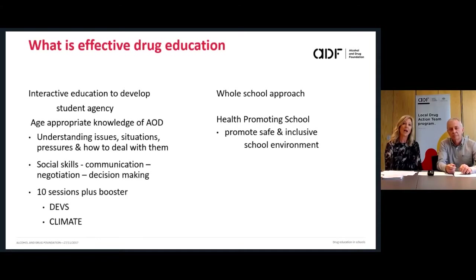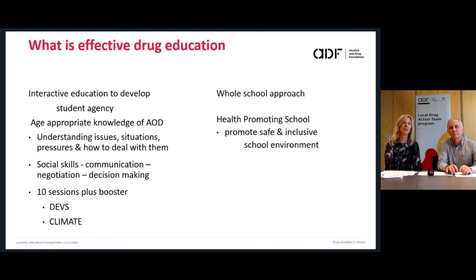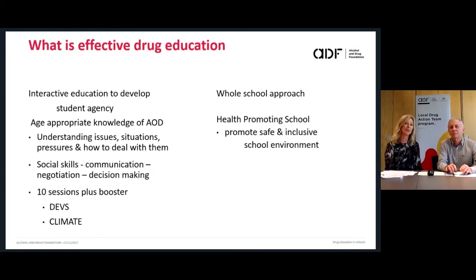Typically, late primary and early secondary school would look at medicines, alcohol and tobacco, giving young people the opportunity to develop skills around decision-making before they've been exposed. At year 9 and 10 the curriculum might contain things about safe parties, whereas in year 11 or 12 it might be around schoolies week. The drugs and issues might be repeated across year levels — that's about reiterating information, but the scenarios and experiences will be different. Communication, negotiating, decision-making, problem solving and problem predicting are all very important skills that students need the opportunity to rehearse.